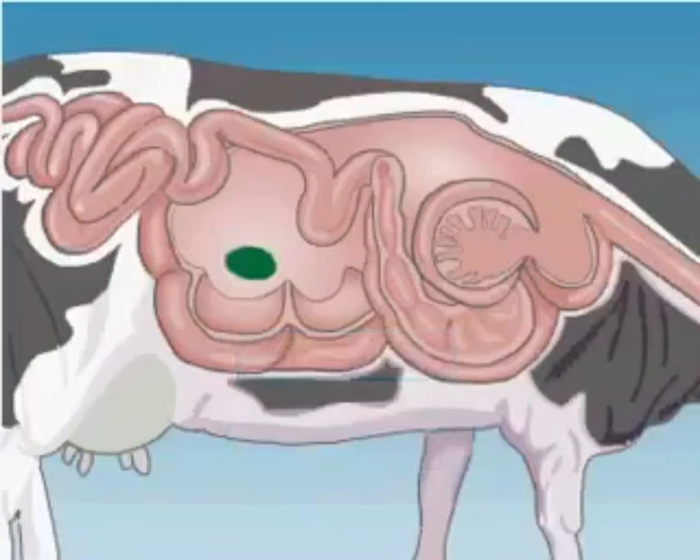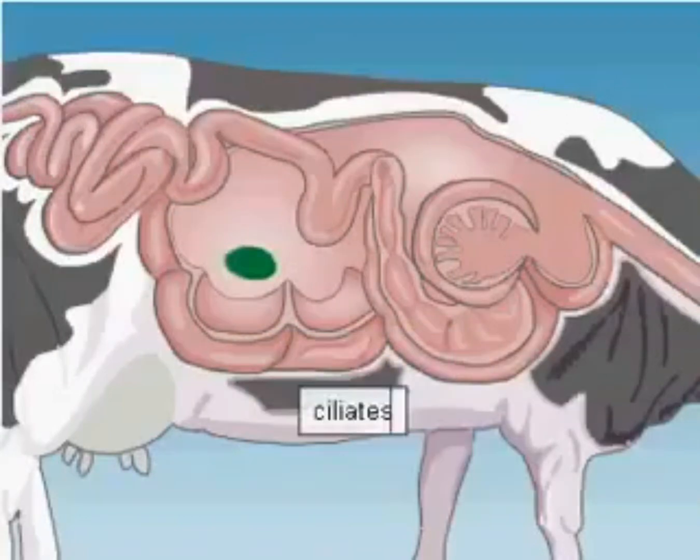Apart from bacteria, the rumen is also inhabited by ciliates. Some of them break down cellulose, while others feed on the rumen bacteria.